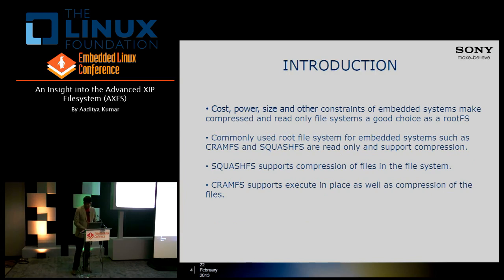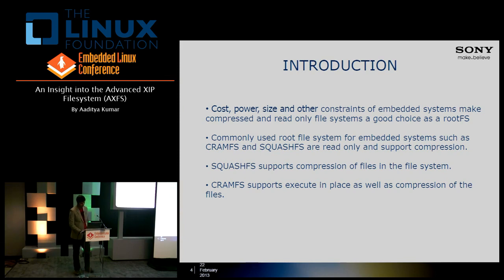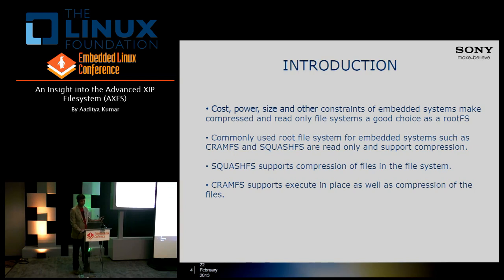About embedded systems: as we know, the cost, power, size, and other constraints in embedded systems make a compressed read-only root file system an ideal choice. Commonly used file systems in embedded systems like CramFS and SquashFS are also read-only and they support compression. Compression and read-only are basically very important in an embedded system.